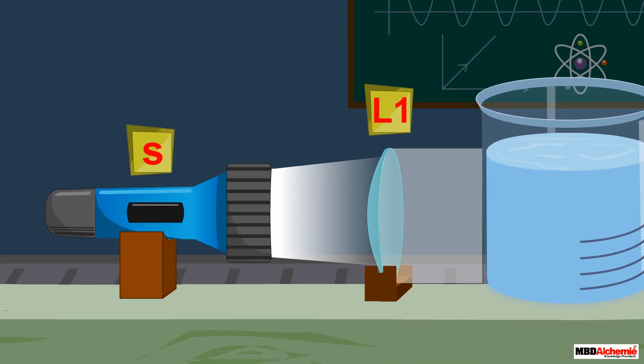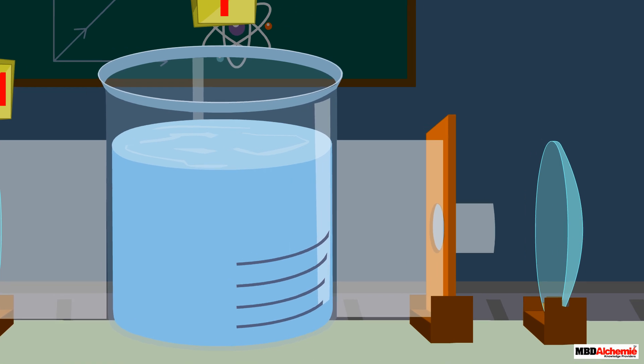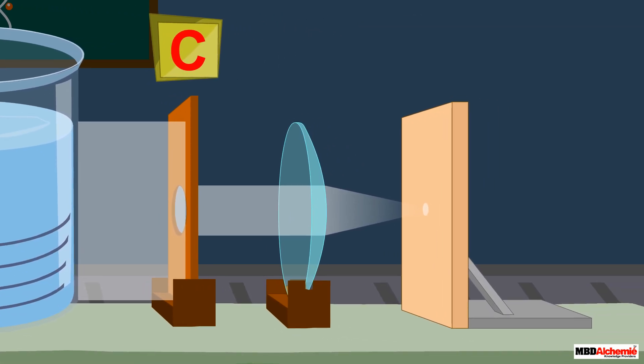Allow the light beam to pass through a transparent glass tank T containing clear water. Next, allow the beam of light to pass through a circular hole C made in a cardboard and obtain a sharp image of the circular hole on a screen MN using a second converging lens L2.